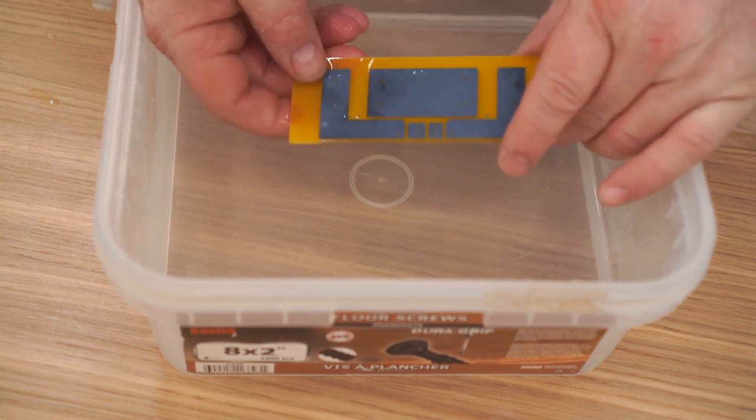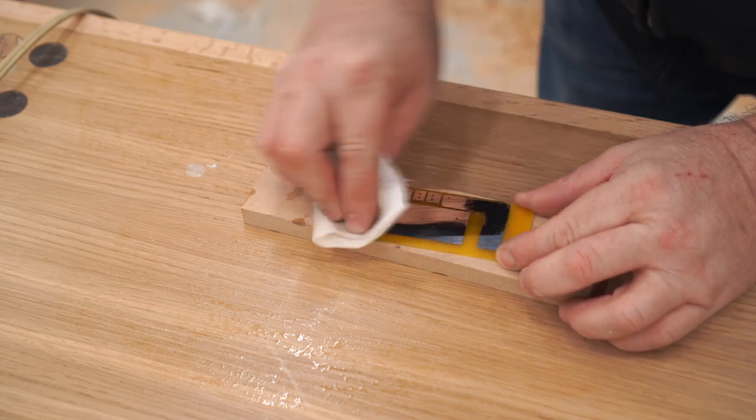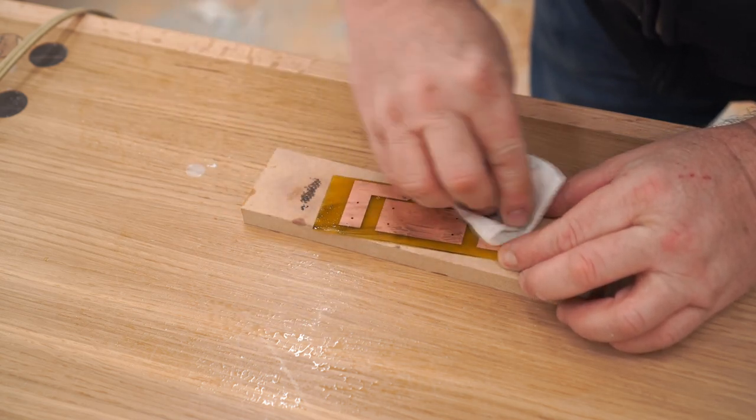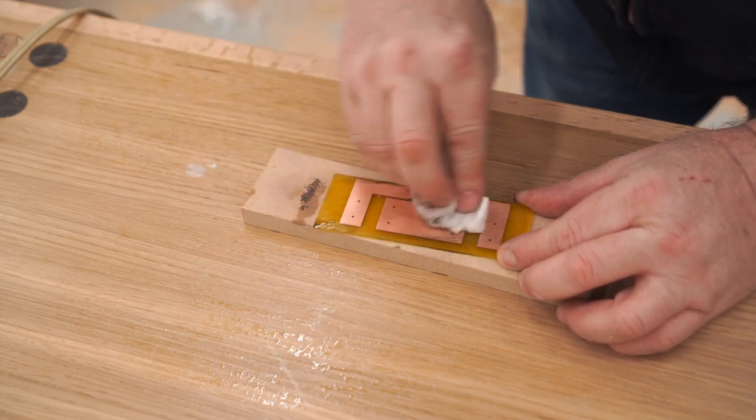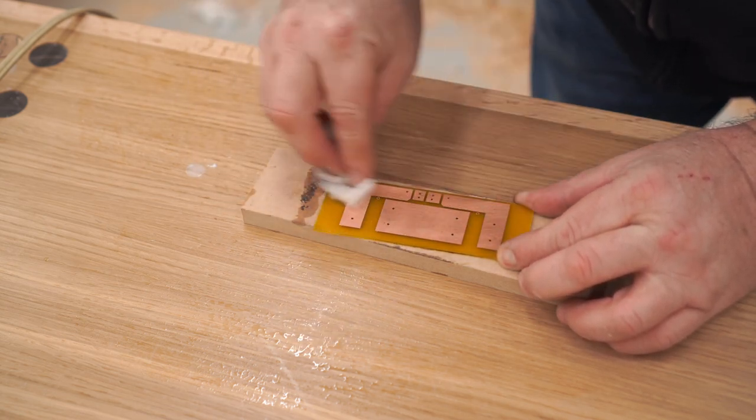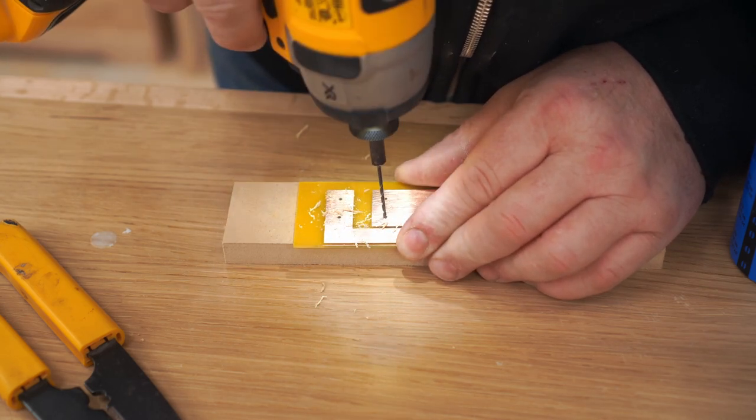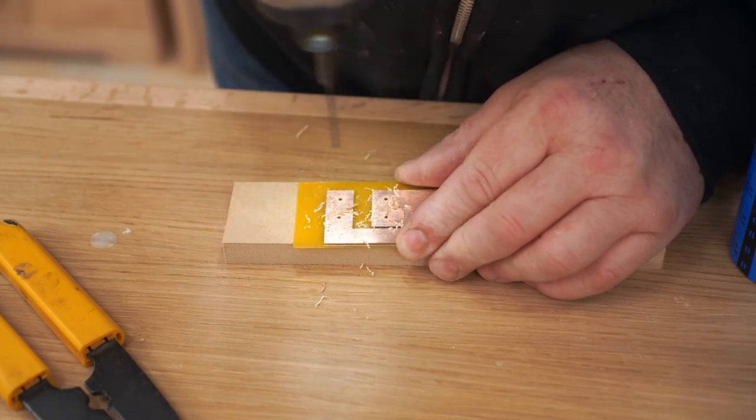The only thing left to do is get rid of that toner that's on the copper, and I'm using lacquer thinner again with a paper towel to wipe that off. So that's all there is to making a circuit board, and even though the traces on the one that I made here are big, you can get really good resolution with this, very fine traces, if you need them.